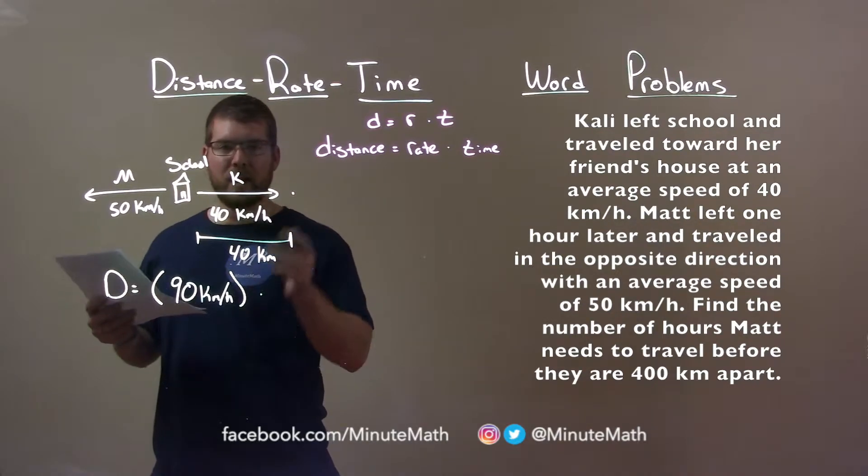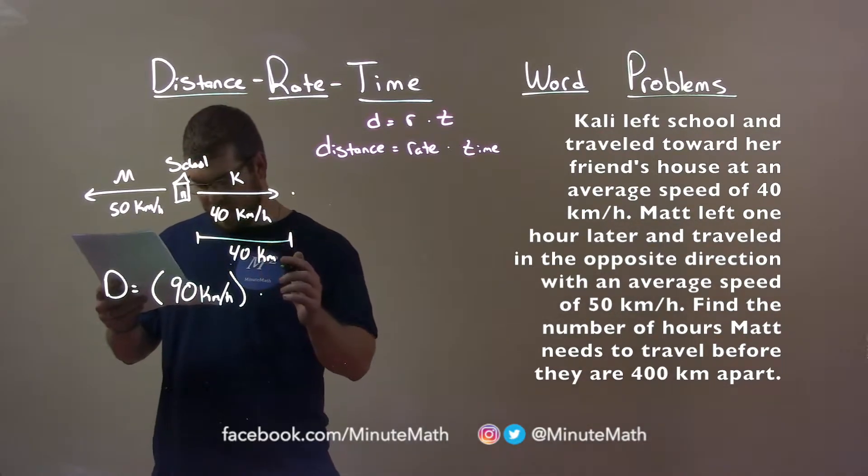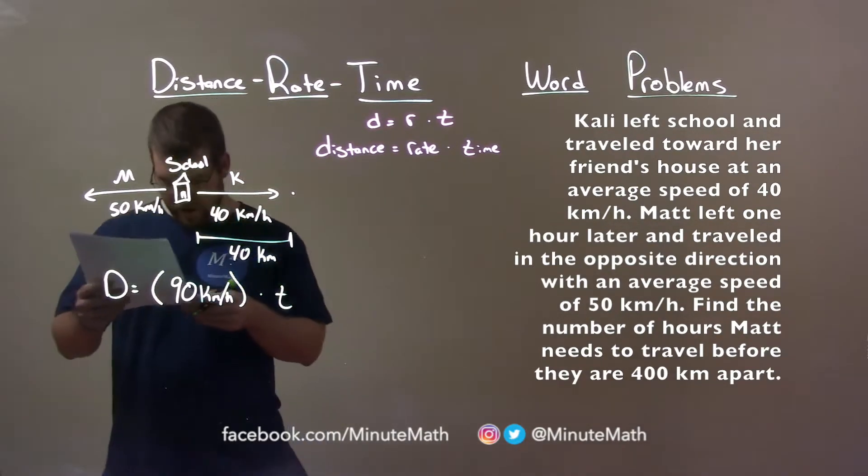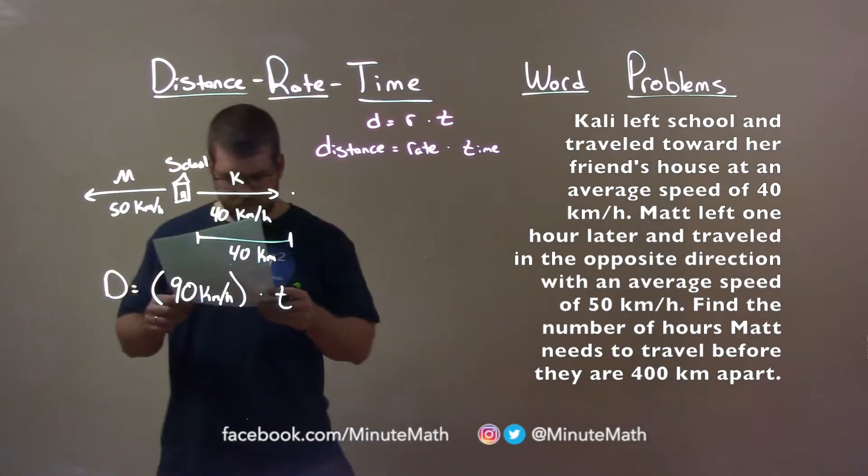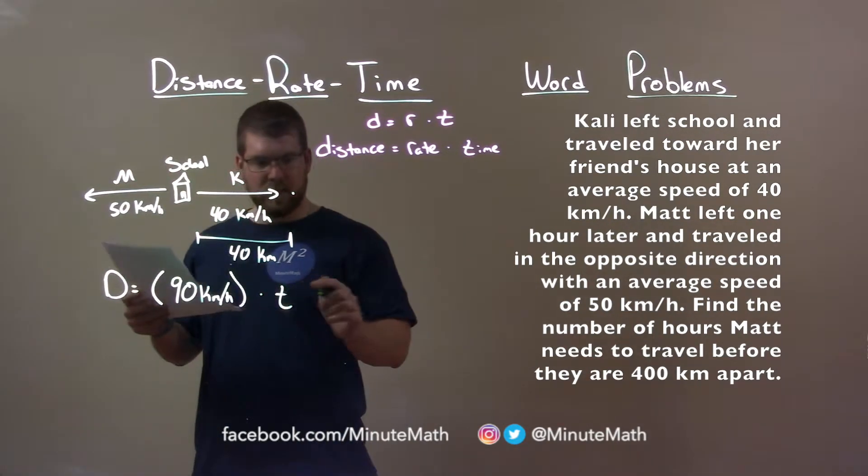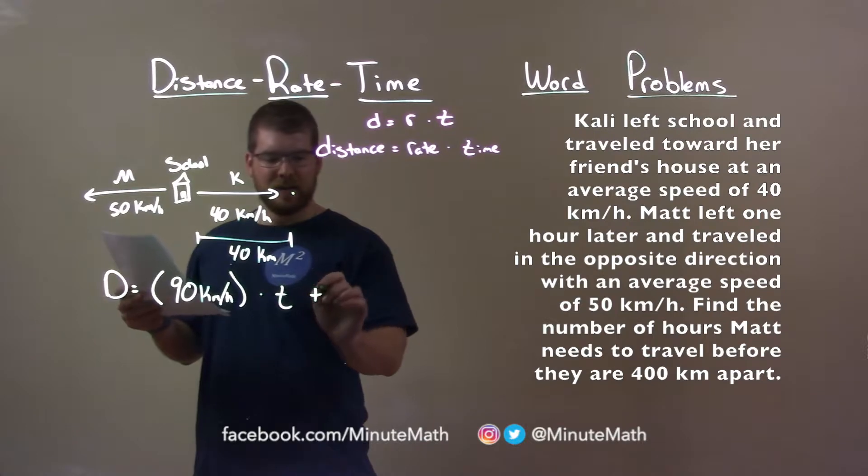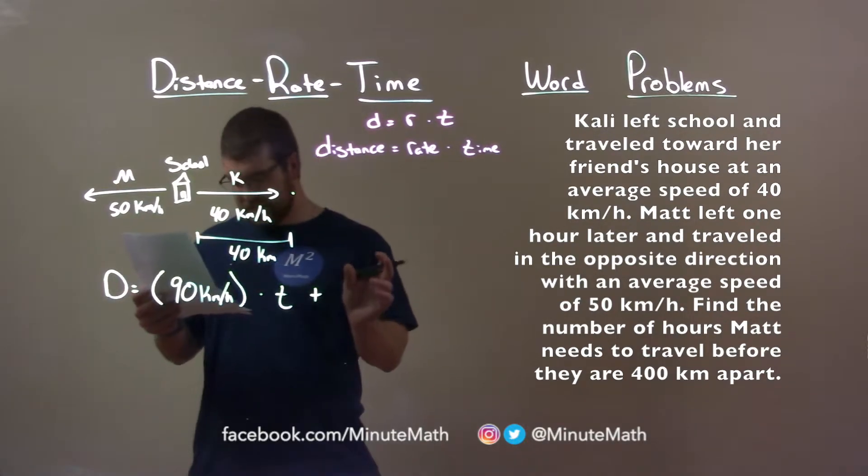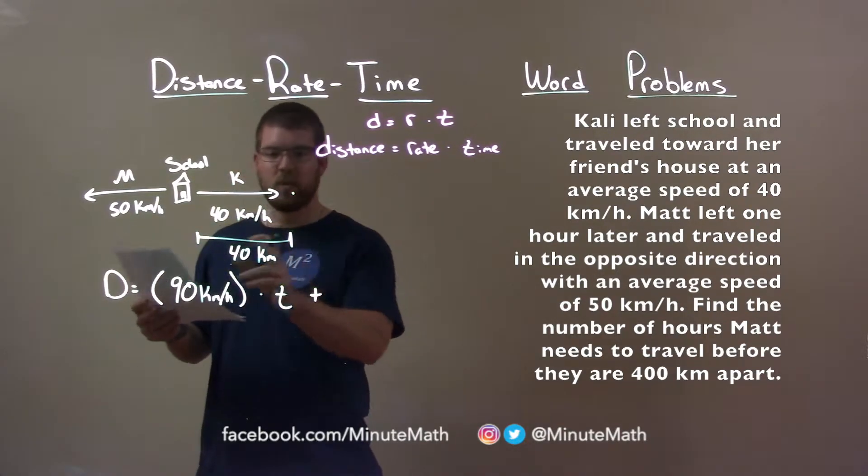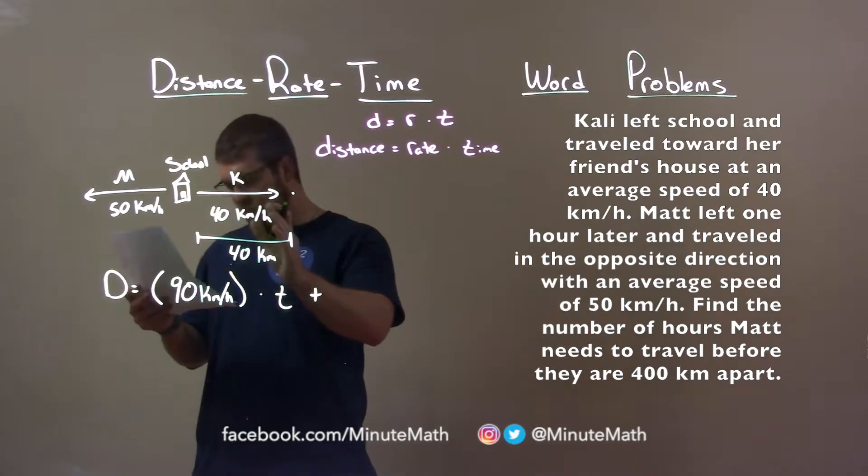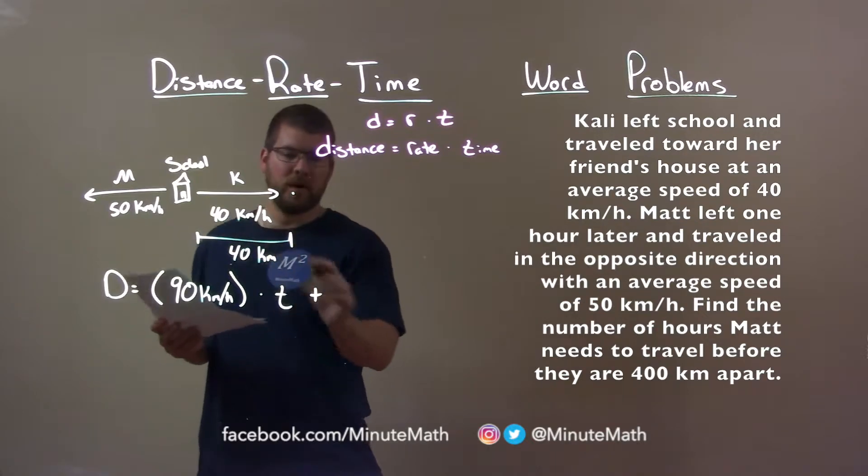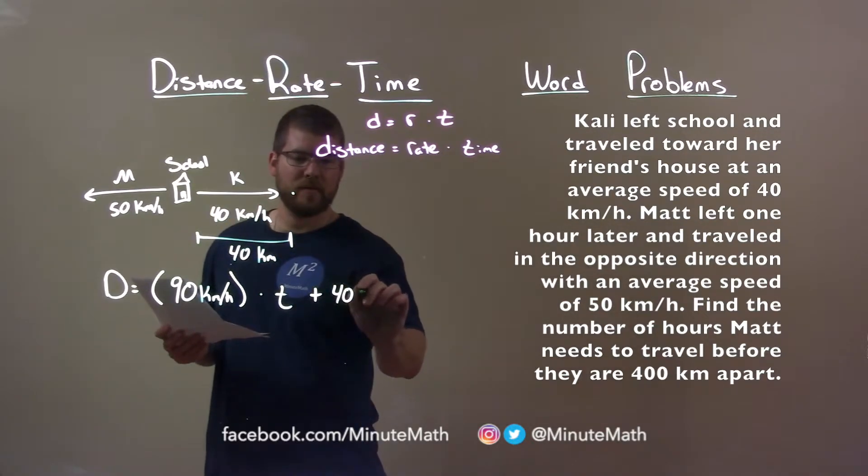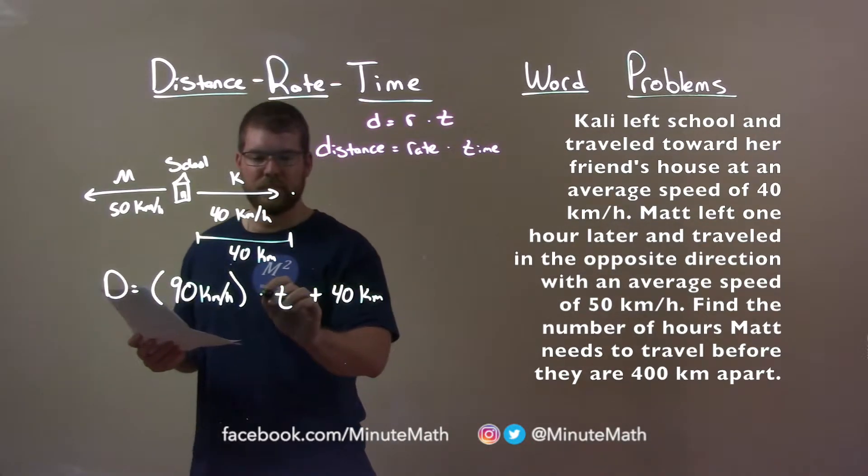Now we have to times that by our time. We don't know how long it will take, okay? How long it will take that. But then we're adding, all right? We're adding the initial distance, the initial distance here of 40 kilometers. So after one hour, okay, after one hour of Cali travel, they're 40 kilometers away, so we make sure we add that to it, okay?